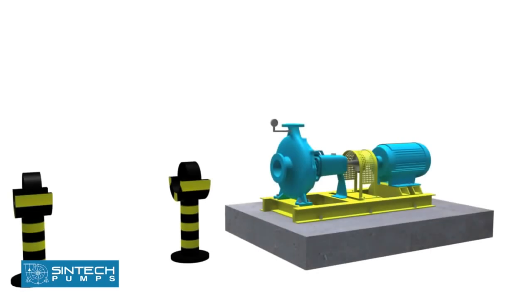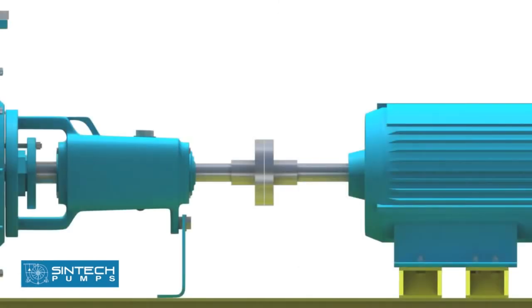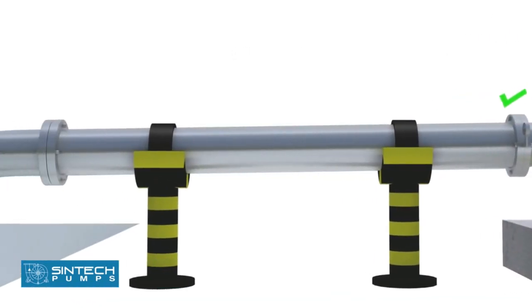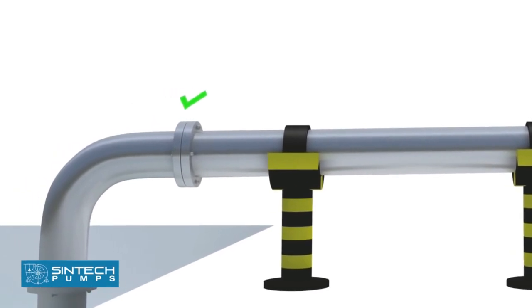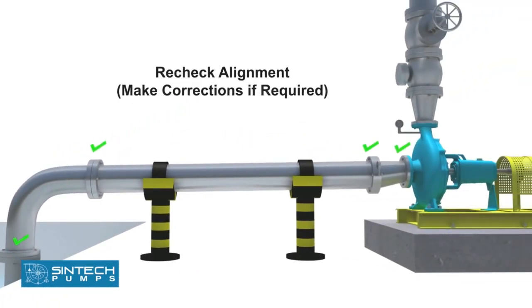After the alignment is completed, the piping associated with the pump should be bolted. Once this is completed, the alignment should be rechecked and similar readings should be obtained. If this is not the case, then the piping should be investigated and suitable corrections should be made. If this is left unattended, it can cause stress on the pump casing.